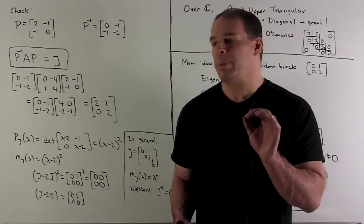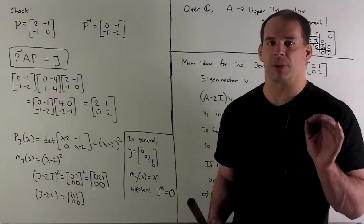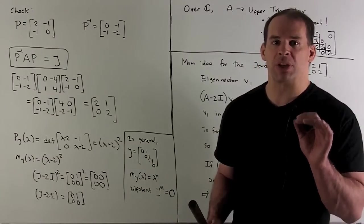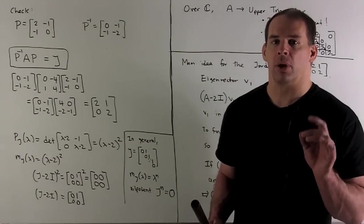Now, our minimal polynomial is then going to be the same as the characteristic polynomial. So, that's a special feature of a Jordan block.